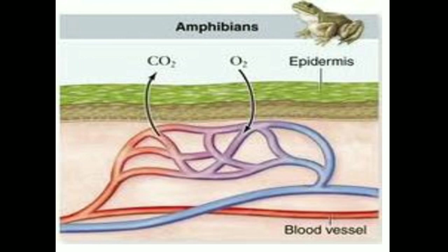Cutaneous respiration occurs all the time, whether the frog is in water or on land. Even during hibernation — that is, during winter sleep — or when the frog is submerged in water, it can still respire through its skin. The second type is buccopharyngeal respiration, and the third is pulmonary respiration, meaning respiration through lungs.